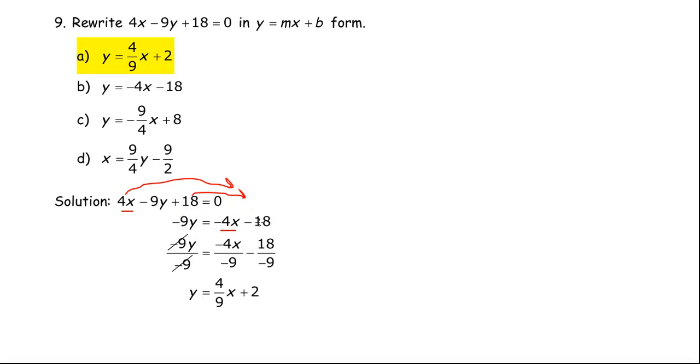Now there's a couple different ways to do that rearranging. If you have learned it like this instead, some teachers will teach you this as well. So we're going to subtract 4x from both sides. And also I want to get rid of the 18 on the left, so I'm going to subtract 18 from both sides.